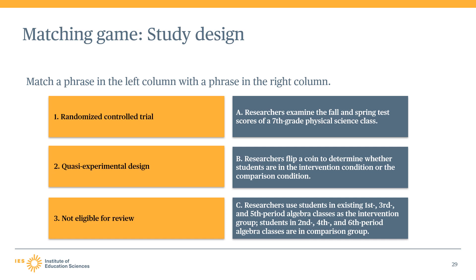The coin has two sides, there are two groups, and participants can go into either one. The second phrase in the left column is quasi-experimental design. The answer is C: researchers use students in existing first, third, and fifth period algebra classes as the intervention group, and students in the second, fourth, and sixth period algebra classes as the comparison group. There are two distinct groups and the study does not use random assignment, which means this is an eligible quasi-experimental design.